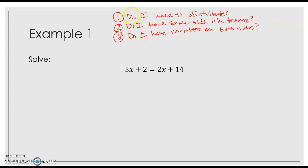So, asking these questions ourselves. Do we need to distribute? We don't have parentheses, so we're not needing to distribute. Do I have same side like terms? So, I'm going to draw my little barrier here. I don't, when I look at the left, there's no like terms over here. And if I look to the right, there's no like terms over here. Now, question three. Do I have variables on both sides? And the answer to that is yes.